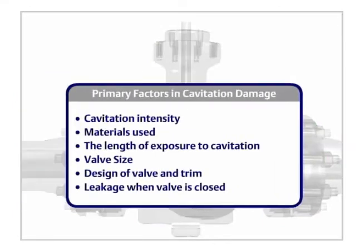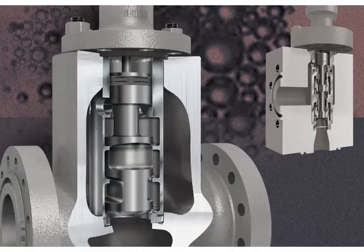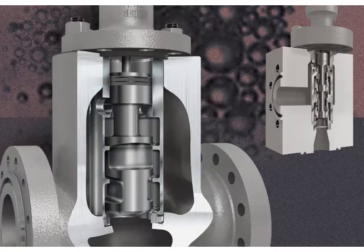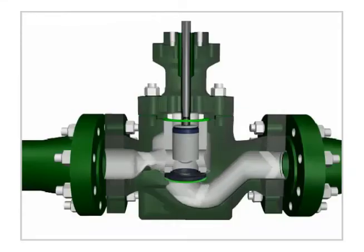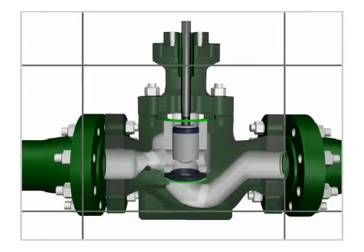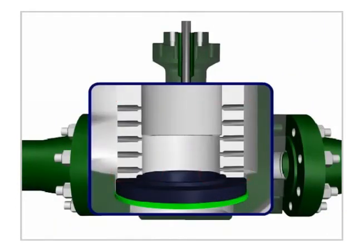Cavitation damage can be reduced by altering or accommodating any of these factors. Cavitation damage can often be reduced or prevented by using the proper components. Emerson offers these solutions: valve liners are constructed of hardened materials to protect the valve body; pressure staging keeps the pressure from falling to near a liquid's vapor pressure, which helps prevent vapor bubbles from forming.